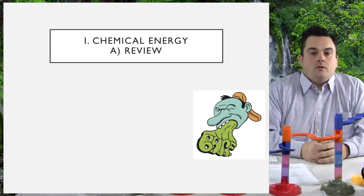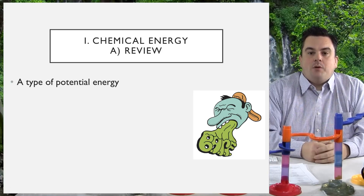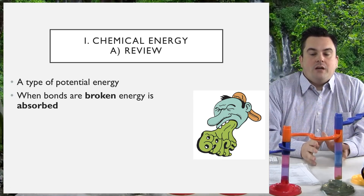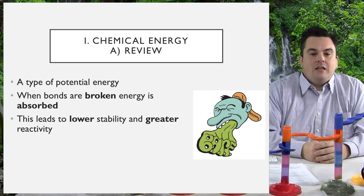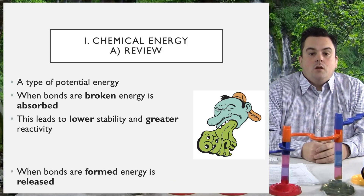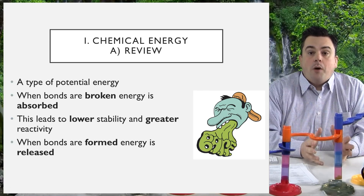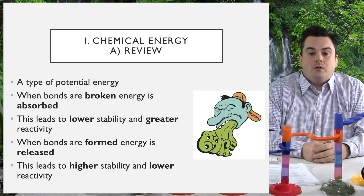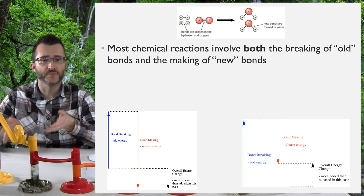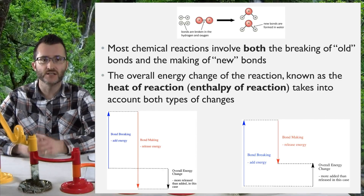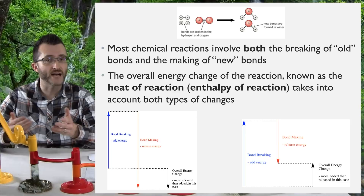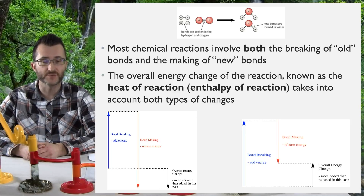Chemical energy — let's review. Chemical energy is a type of potential energy. When bonds are broken, energy is absorbed. This leads to lower stability and greater reactivity. When bonds are formed, energy is released. This leads to higher stability and lower reactivity. Most chemical reactions involve both the breaking of old bonds and the making of new bonds.